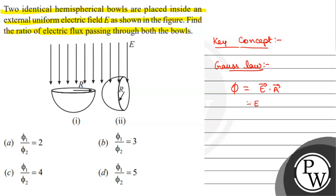E dot A means EA cos theta. It means that when the electric field is perpendicular to the area, then cos theta is zero, then phi is zero.